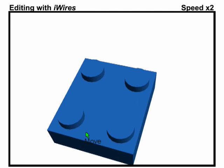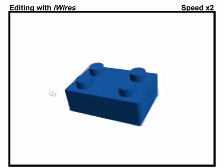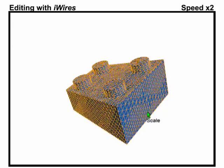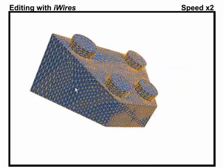We take an analyze and edit approach where, prior to editing, we perform a lightweight analysis of the input shape to extract a few descriptive features, termed I-wires.